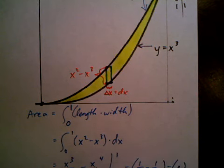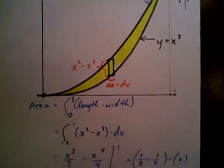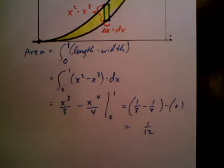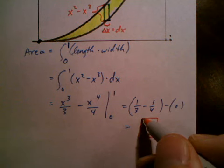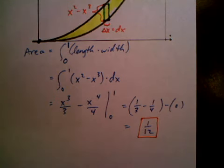So we get 1 third minus 1 fourth, which is 1 twelfth. And I didn't show you that. I talked about it, but there we go. So 1 twelfth is the area of the region between the two curves.